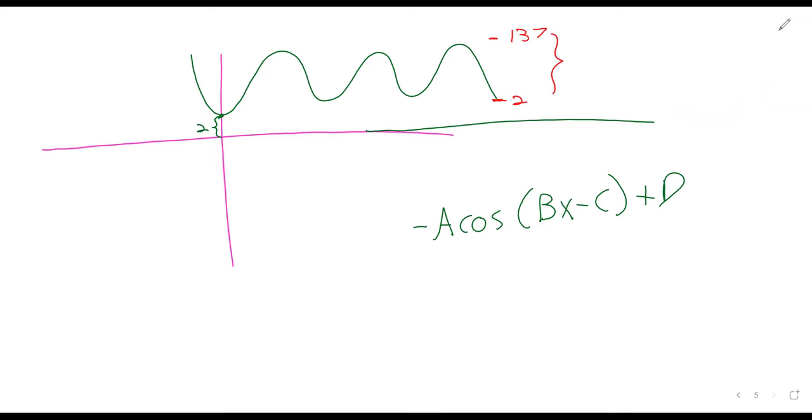So the amplitude, we actually could have figured this out, the amplitude's going to be half of the diameter. It's half of the distance between the minimum and the maximum values. So it's 135 divided by 2, 67.5.